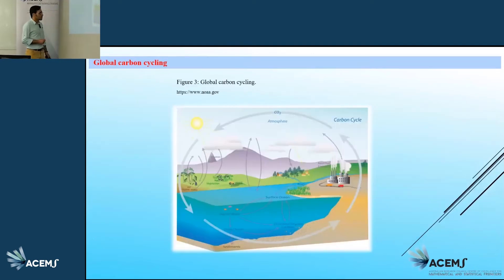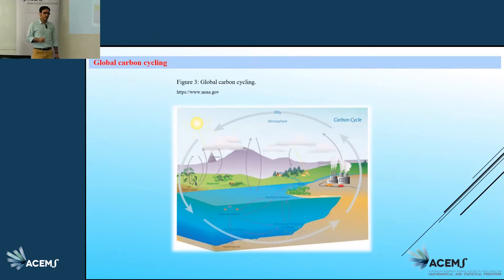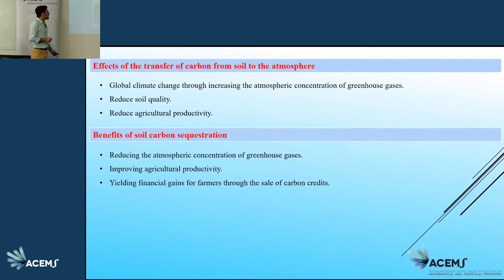In fact, carbon doesn't destroy or disappear in nature — it just moves from one storage reservoir to another. Soil is one of the largest carbon reservoirs, and large-scale carbon emission from the soil into the atmosphere has many impacts on global climate change, soil quality, and crop productivity.